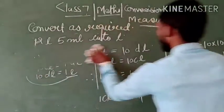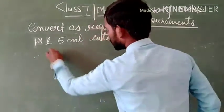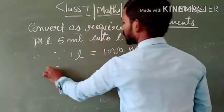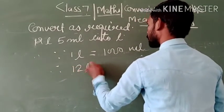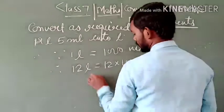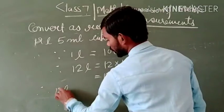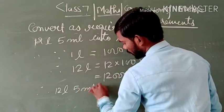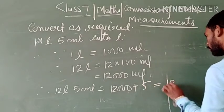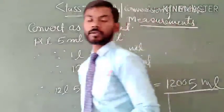So 12 litre 5 millilitre is equal to 12000 plus 5, which equals 12005 millilitres. This is the required result.